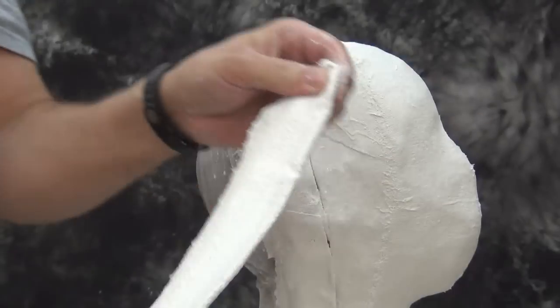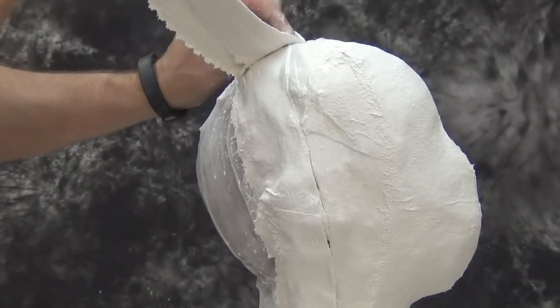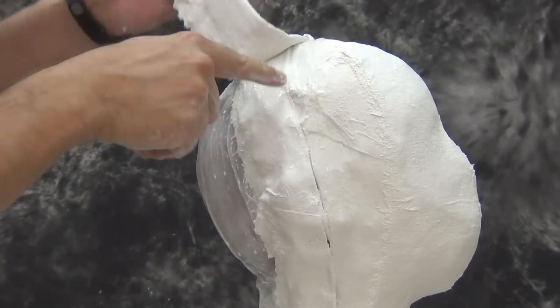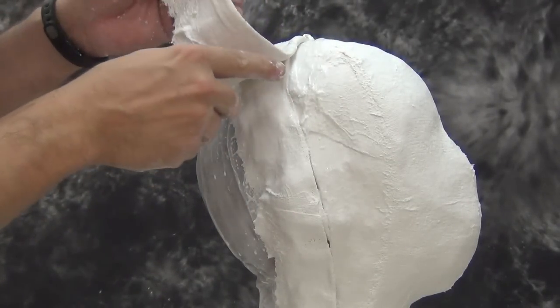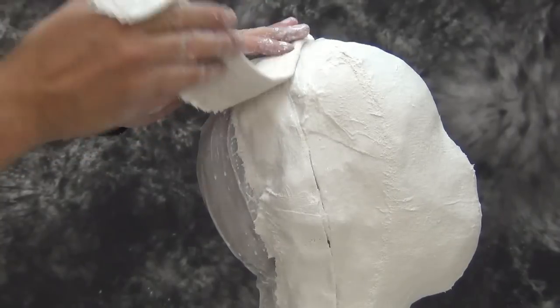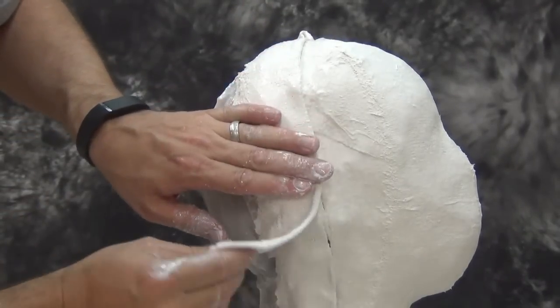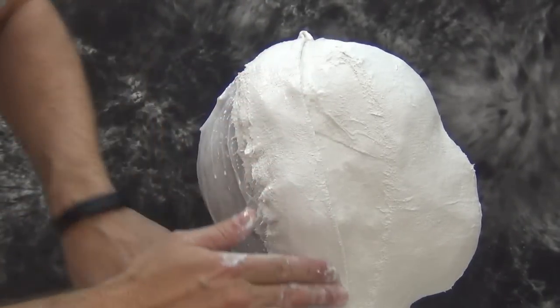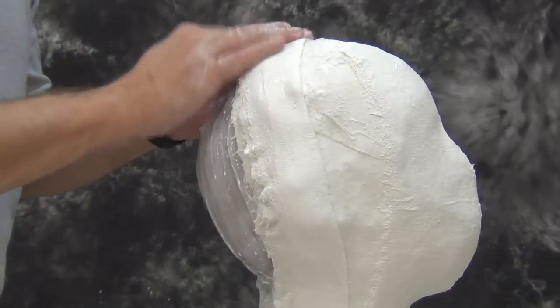Once we've defined that second half, we're ready to make our overlapping side that goes over the seam. Again, that creates that interlocking edge. This is why it's critical to properly release that edge, because you need that to come apart as clean as possible.